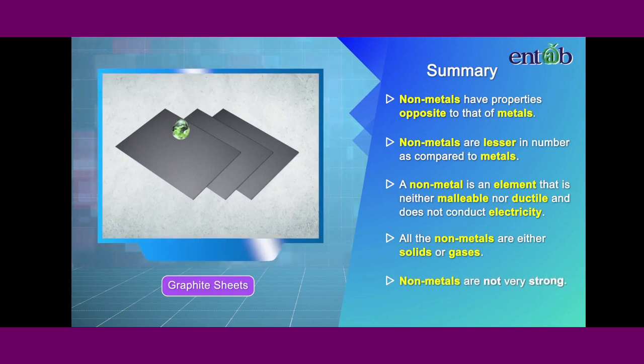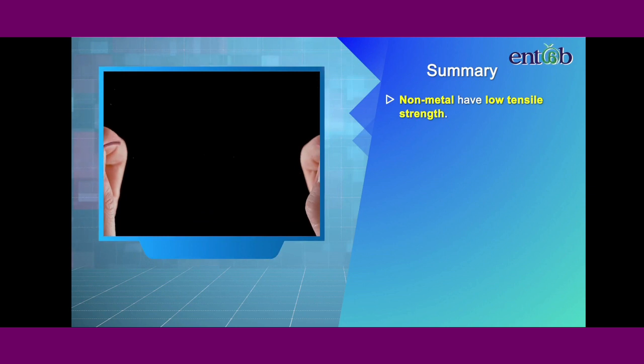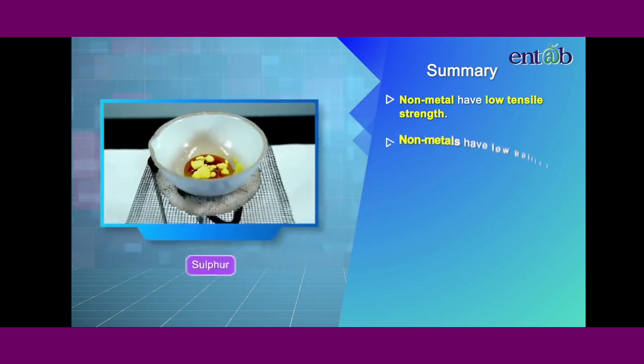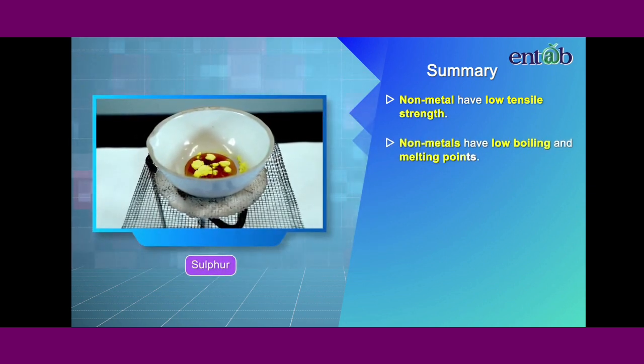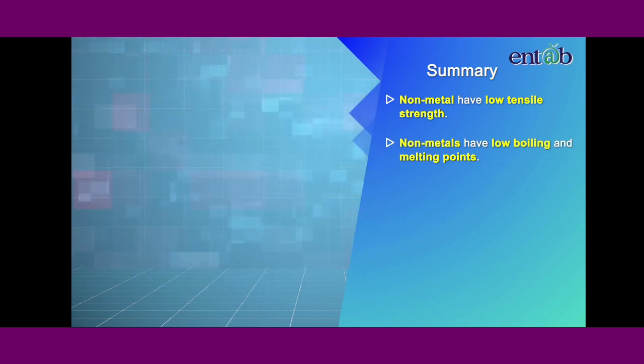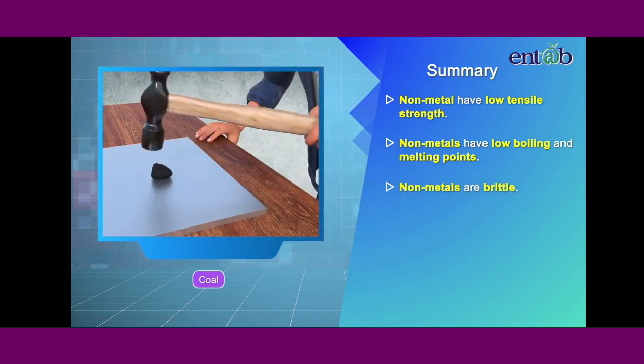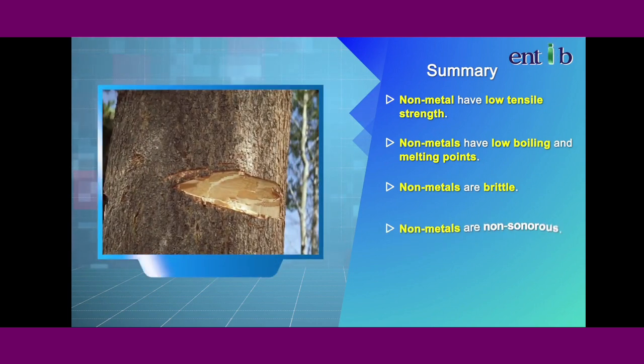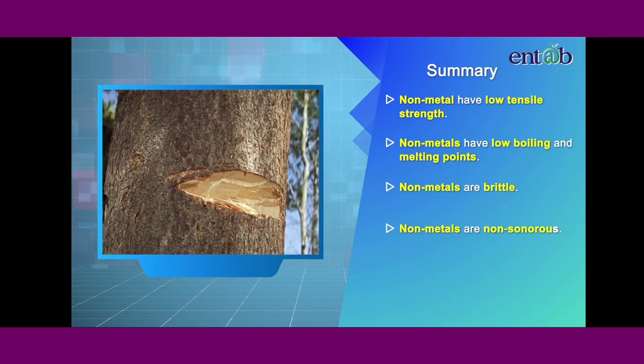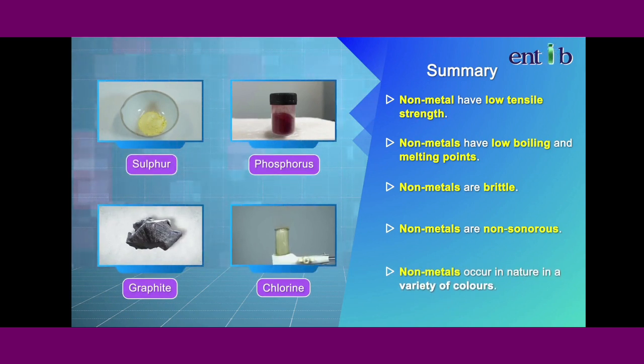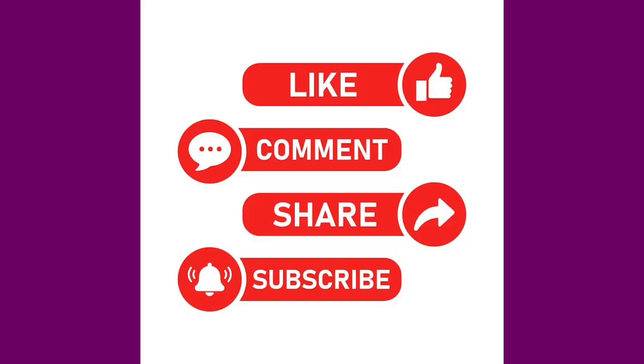Nonmetals are not very strong. They have low tensile strength. Nonmetals have low boiling and melting points. Nonmetals are brittle. Nonmetals are not sonorous. Nonmetals occur in nature in a variety of colors. So this was all about the physical properties of nonmetals.